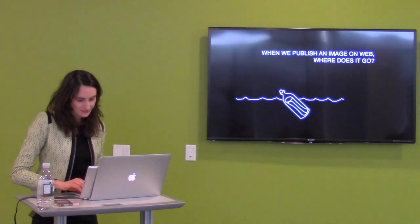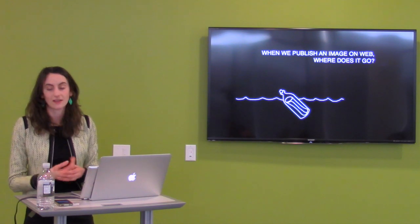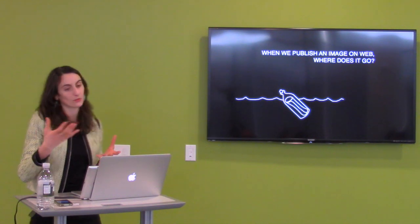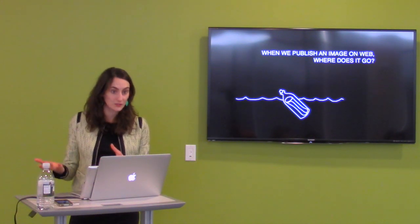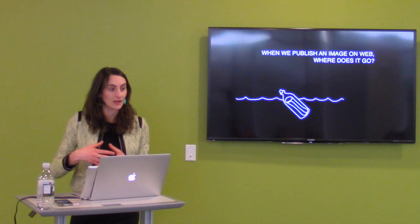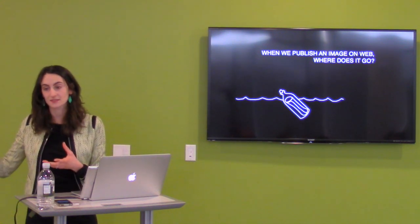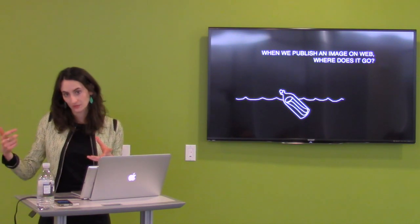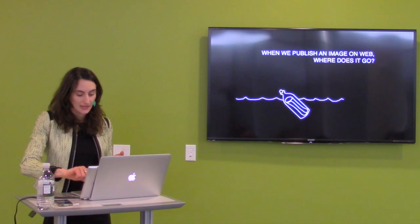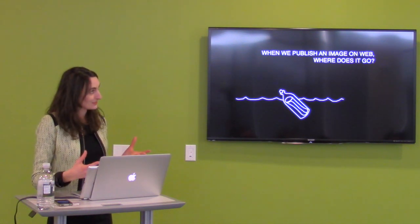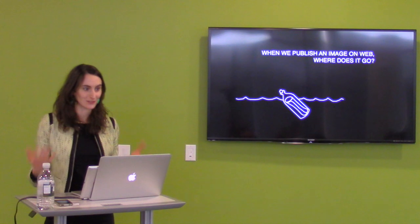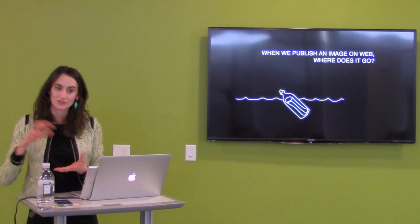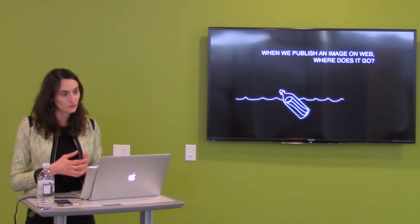This project deals with the circulation of still images online and begins with a very simple question: when we publish an image on the web, where does it go? What do people do with it? How does it navigate the different territories of online websites? What are these trajectories along data streams? This simple question raises a lot of methodological and ethical issues, especially when you research on sensitive topics such as social movements.